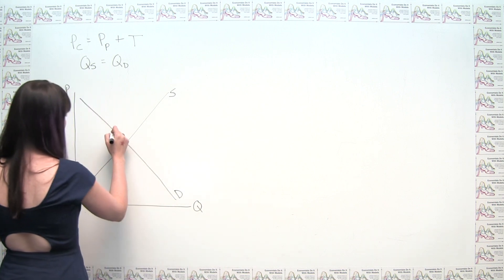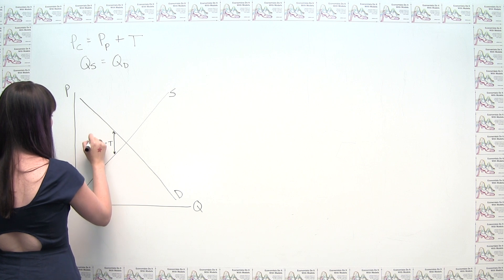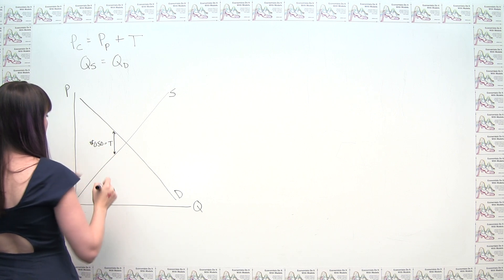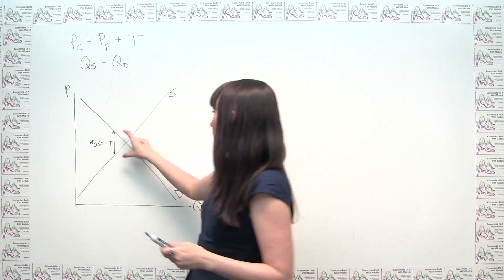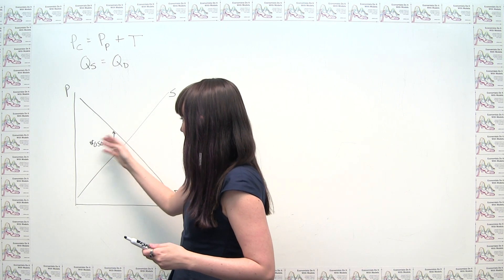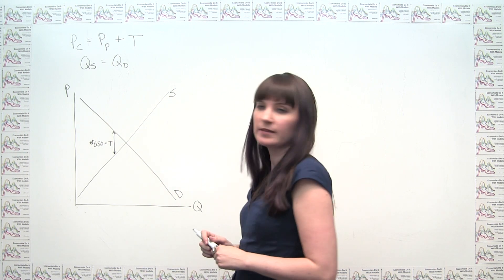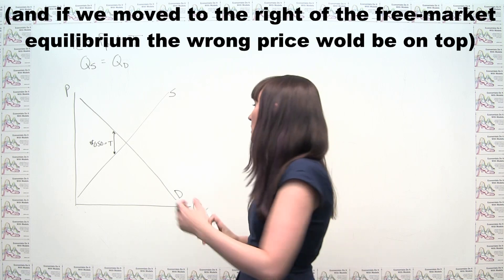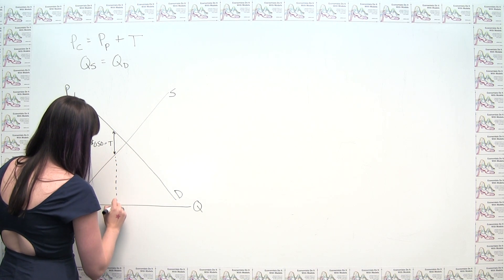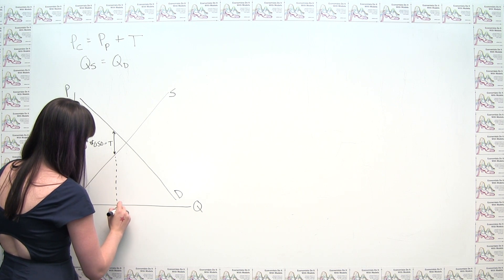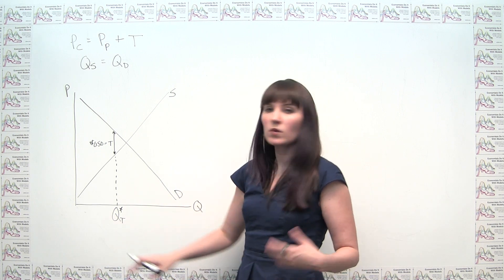Say the amount T was hypothetically this big — in this particular problem it's 50 cents. There's only one place where this holds, because if we move a little bit to the left the wedge would be bigger, and if we move to the right it would be smaller. There's only one quantity where this is true, and by default that's our Q star sub T, our equilibrium quantity with the tax.